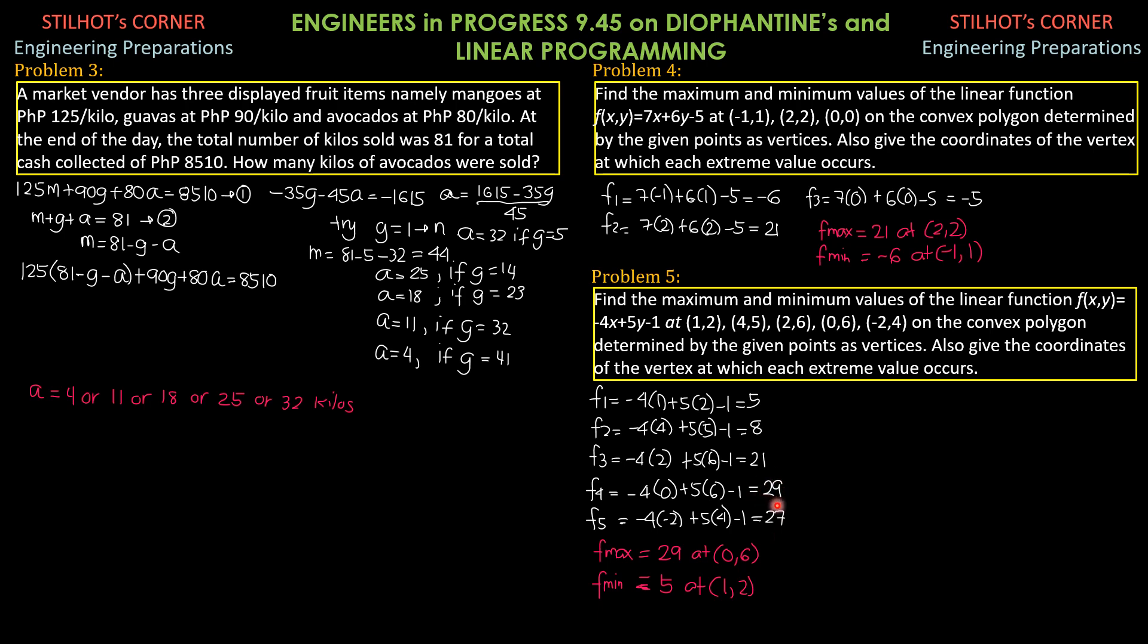Therefore, the maximum value is 29, and it occurs at 0 comma 6, and the minimum value is 5, and it occurs at 1 comma 2.